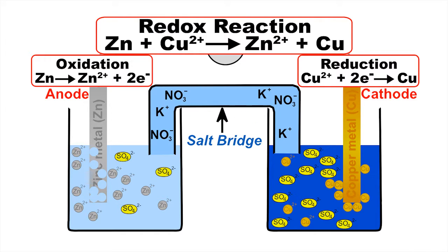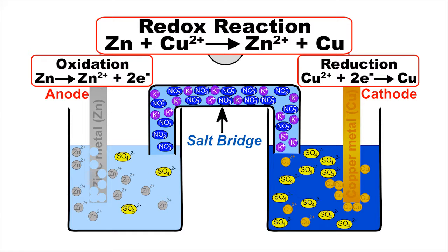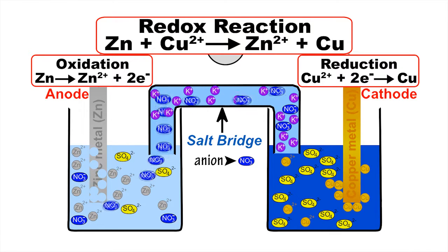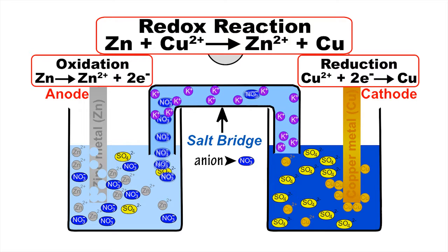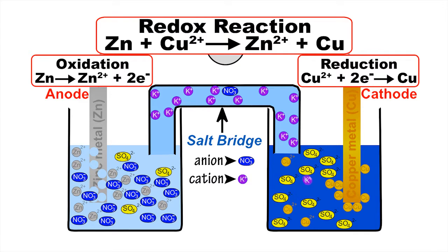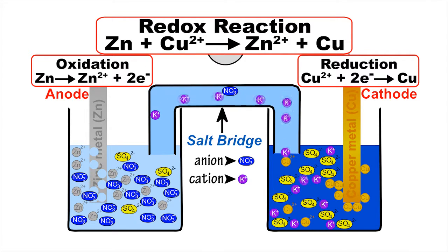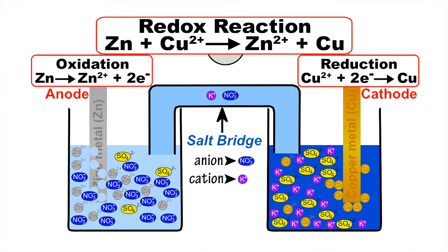The salt bridge provides a source of positively and negatively charged ions that can be used to replace, or balance, ions that are lost or created during reduction and oxidation. Negative nitrate ions, called anions, migrate into the half cell containing the anode, to balance the excess of positively charged zinc ions created through oxidation of zinc. While positively charged potassium ions, called cations, migrate into the half cell containing the cathode, to replace any positively charged copper ions removed from solution by reduction, in the formation of metallic copper.